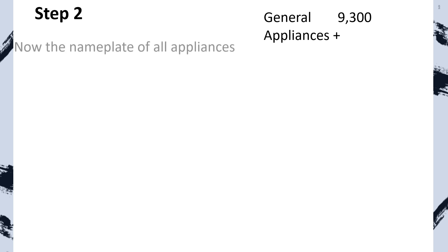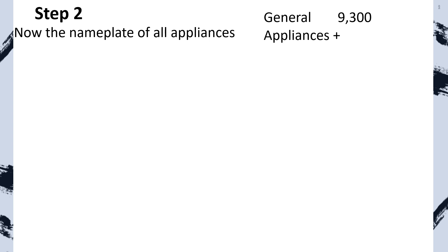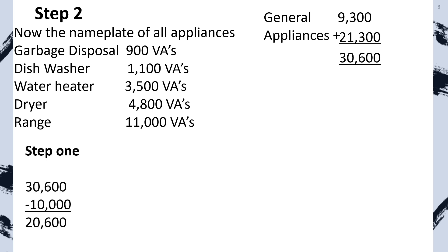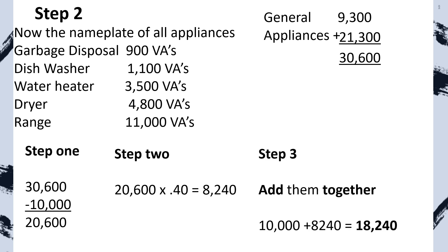Now find the nameplate rating of all appliances — they're listed out here. We total them together and that equals 21,300 VAs. Total those two together and now we're ready to apply our demand factor to this portion of the load calculation. We take the first 10,000 at 100%, take the remainder at 40%, and add them back together. Now let's go do our HVAC.